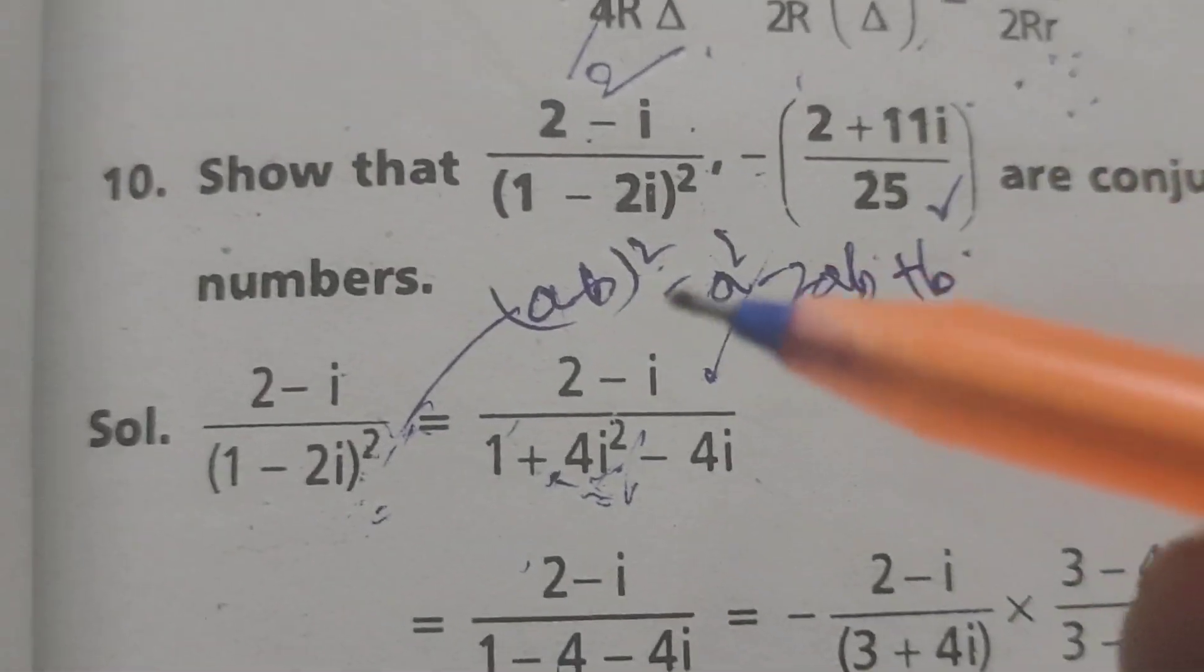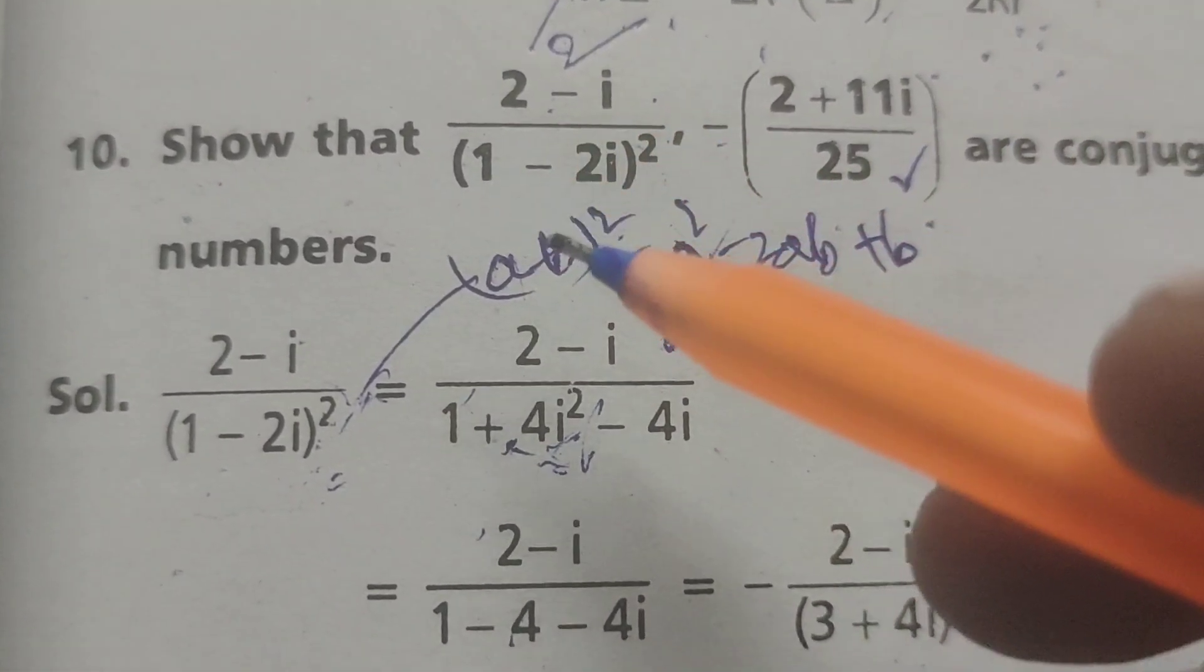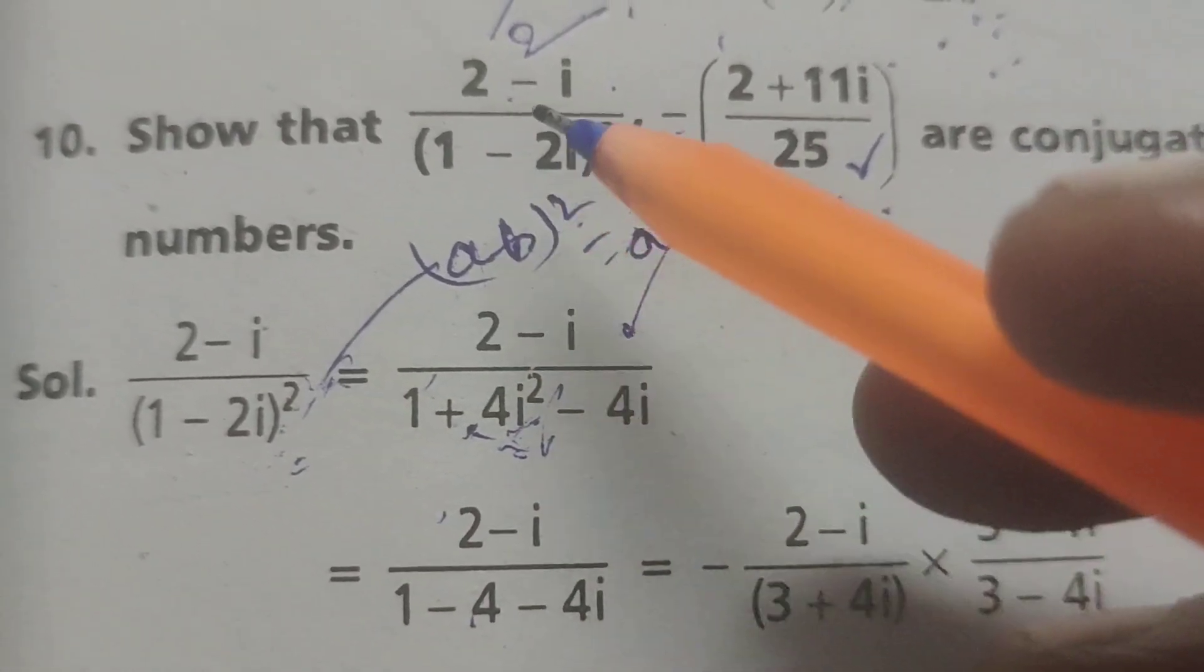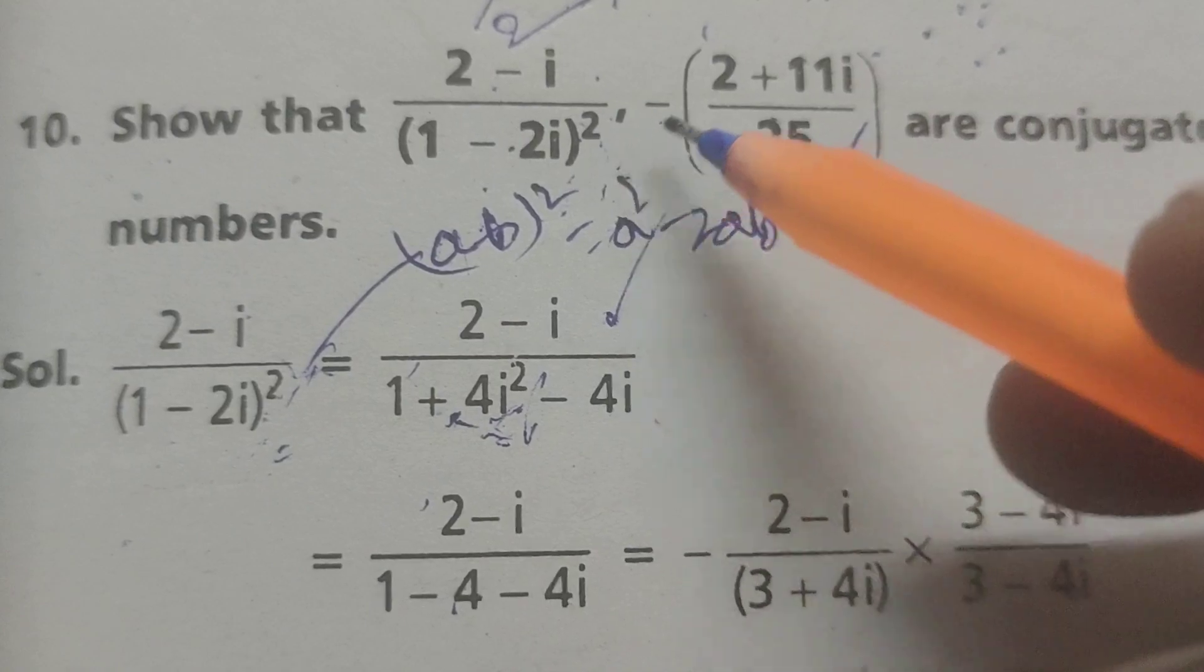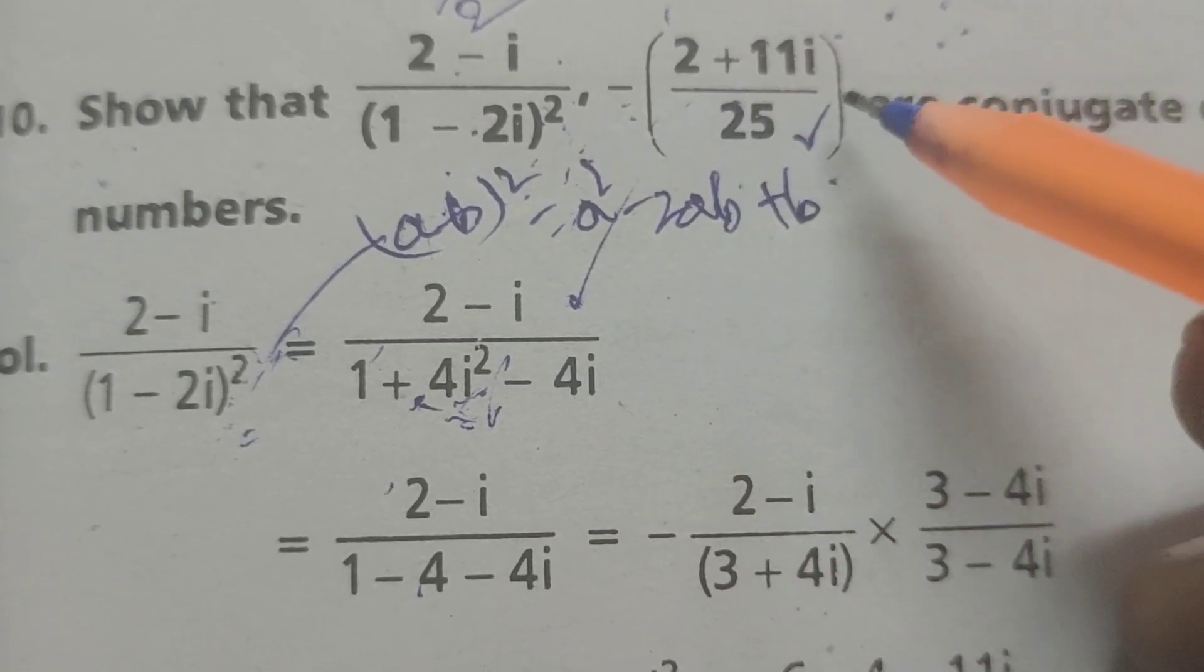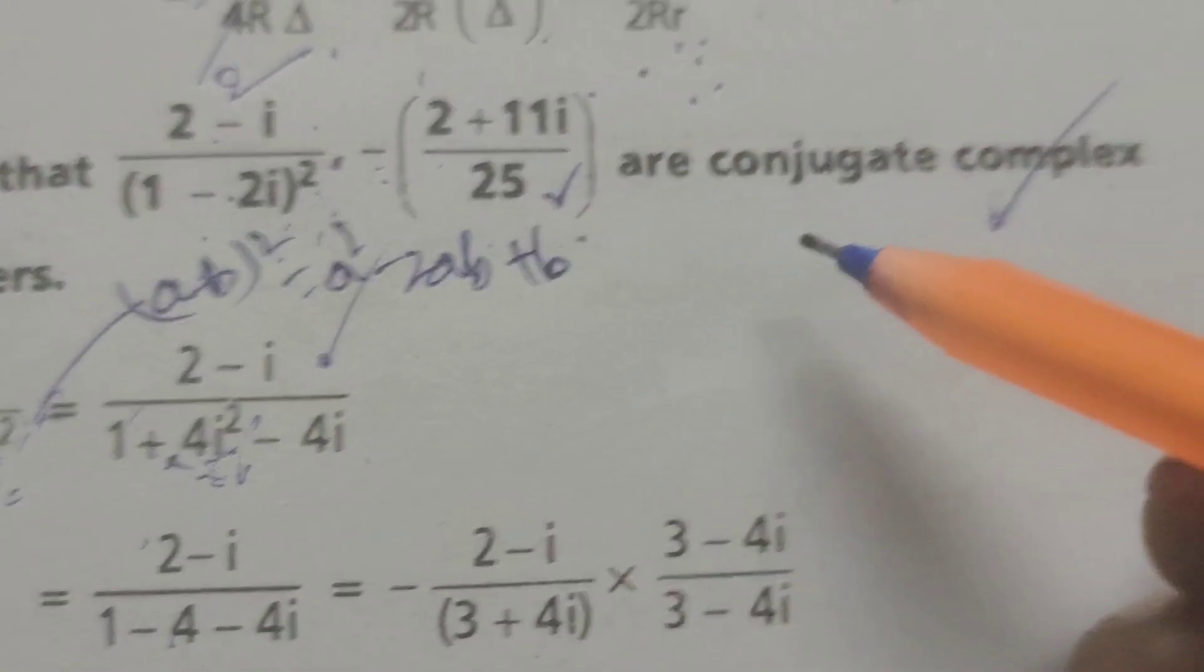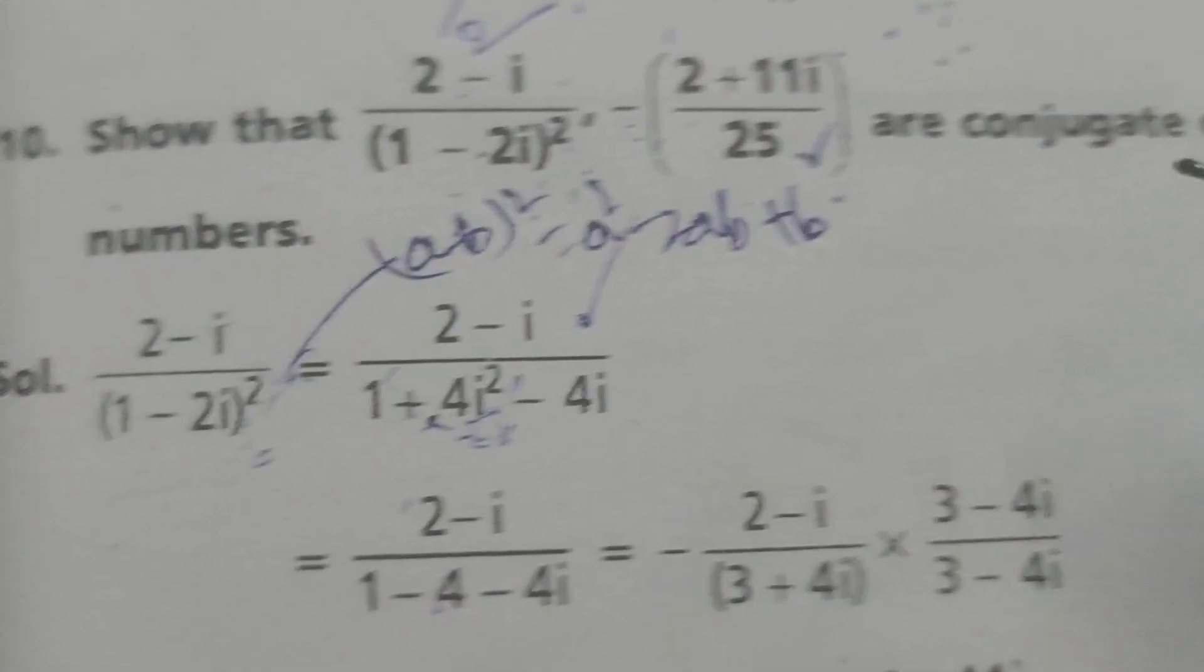Hi everyone, this is Dr. Aiti. Now, today we are going to explain this problem: Show that (2-i)/(1-2i)² and (-2+11i)/25 are conjugate complex numbers.